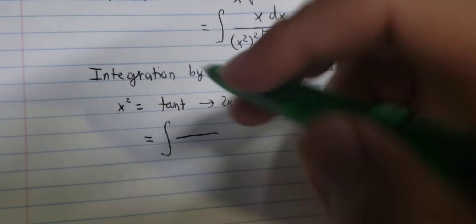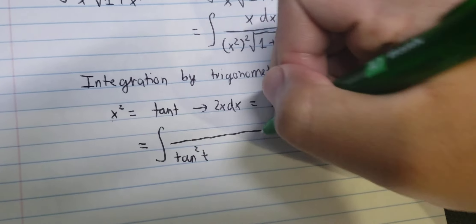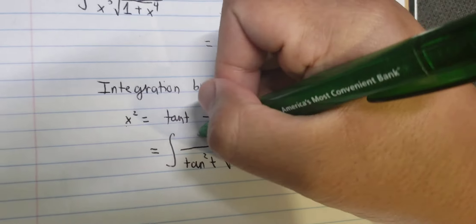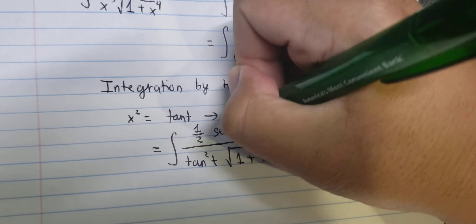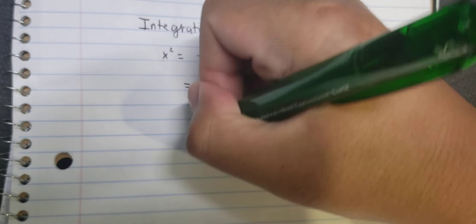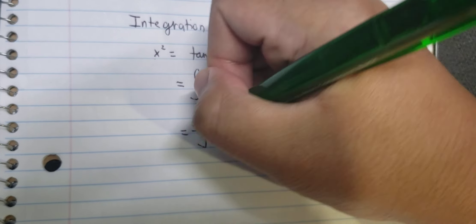So x squared we change for tan(t), and we have tan(t) squared here. This one we also have tan(t) squared. And x dx we change for this one.